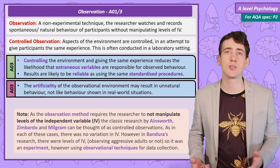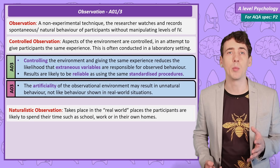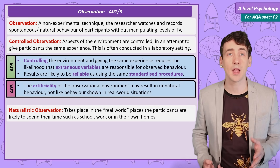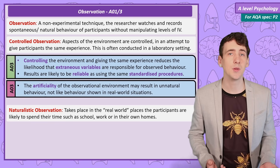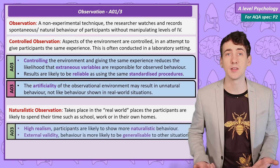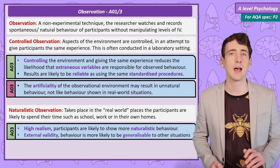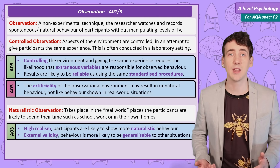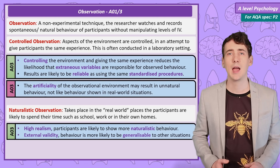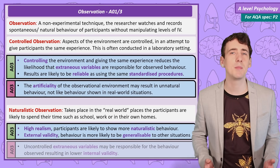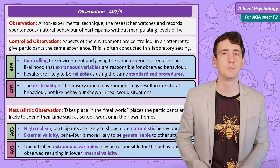Our other option is a naturalistic observation. The participants are observed in their normal environment, and this has the advantage of high realism. The participants should behave as they normally would, and we can claim that our findings have external validity — in this case, ecological validity. However, the lack of control means there might be unknown extraneous variables causing the behaviour.